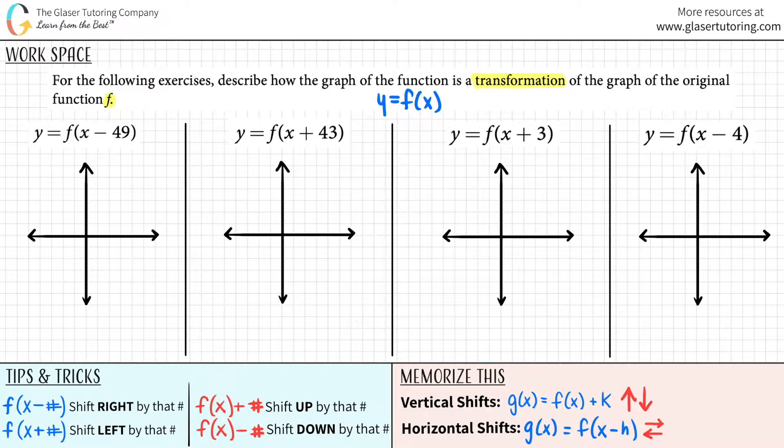And in these four examples, it looks like we have a transformation, right? In this case, it's x minus 49, x plus 43, plus 3, and then minus 4. So we just have to explain what happened.